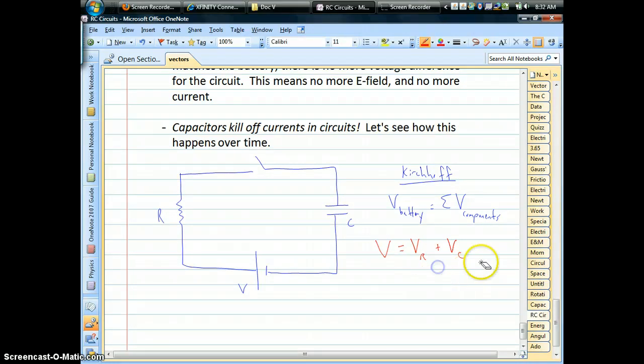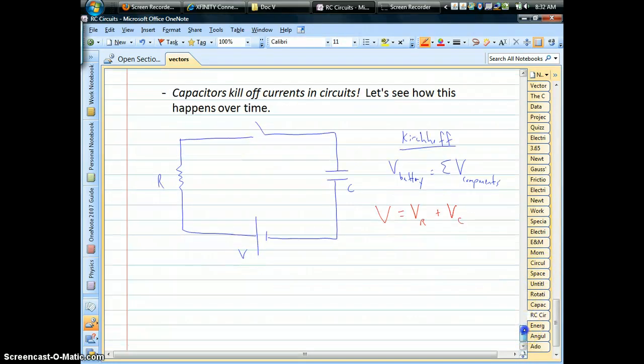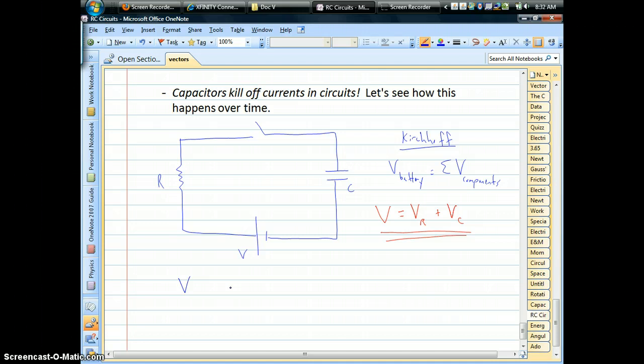That's kind of conceptually what's going on here. Ultimately the current will die off because of the capacitor. It's this voltage equation that we use to actually write down the equation for the circuit. So what I'll do here is start us off, and the rest of this video I want to work through the derivation with you. This tends to cause people some issues, but after you see it a few times, it's really not too terrible. It's mostly algebra.